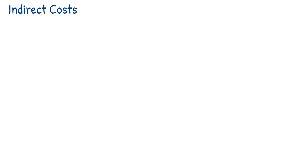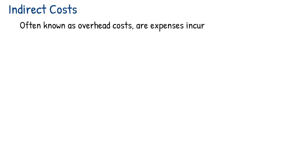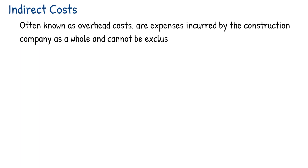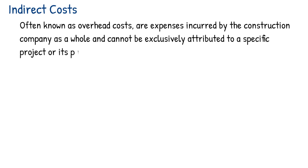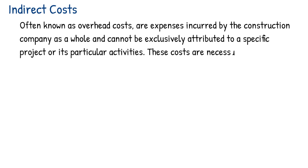Indirect costs, quite often known as overhead costs, are expenses incurred by the construction company as a whole and cannot be exclusively attributed to a specific project or its particular activities. These costs are necessary for the overall functioning and support of the company.